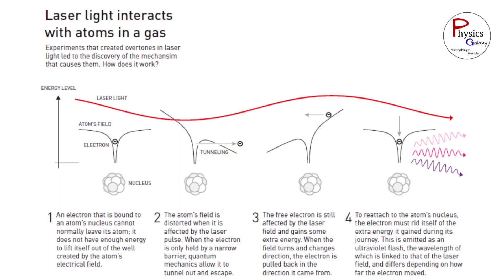In first case, an electron that is bound to an atom's nucleus cannot normally leave its atom. It does not have enough energy to lift itself out of the well created by the atom's electrical field. And in the second case, the atom's field is distorted when it is affected by the laser. When the electron is only held by a narrow barrier, quantum mechanics allow it to tunnel out and escape.